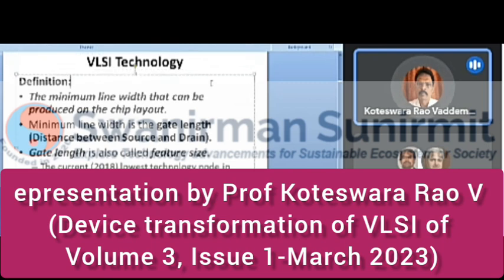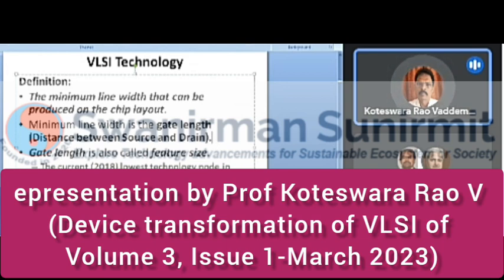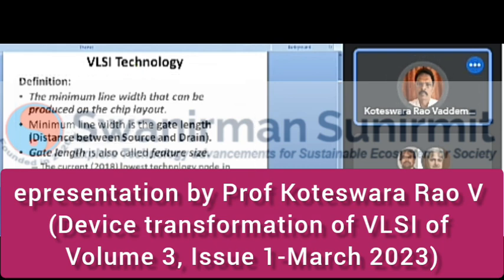VLSI technology is differentiated by the minimum line width that can be produced on the chip, which is the gate length — also called the feature size. The gate length is the distance between the source and the drain. For example, 45 nanometer technology means the gate length is 45 nm. As of 2018, the lowest technology node in production is 7 nm, with 5 nm under development, and 3 nm in testing. Below 2 nm, the material approaches one molecule in thickness and requires principles of nanomaterials and nanotechnology.